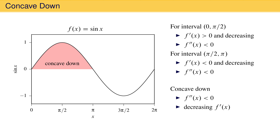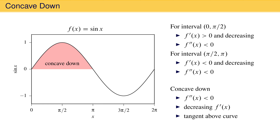Geometrically, a region in which a function is concave down will have the straight line tangent to the function above the curve. As you can see, the tangent lines lie above the curve in this case. Roughly speaking, a curve is concave down on a region if you can't imagine it being able to hold water.